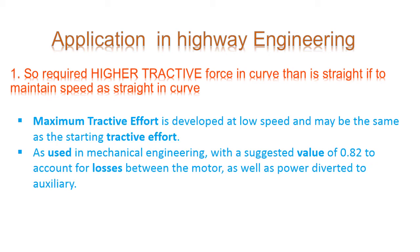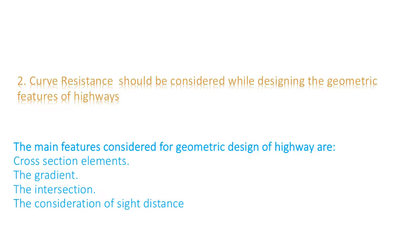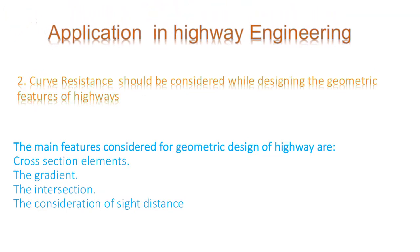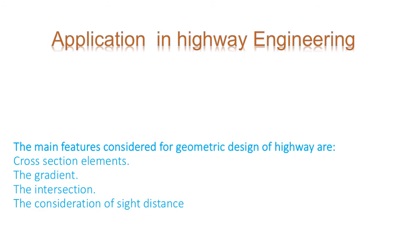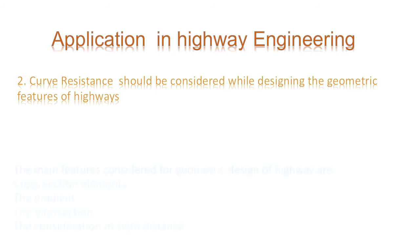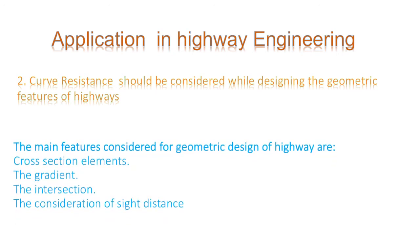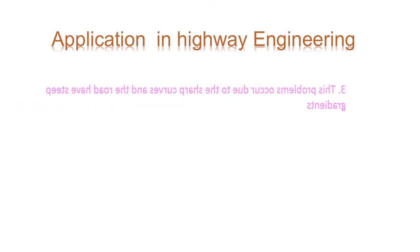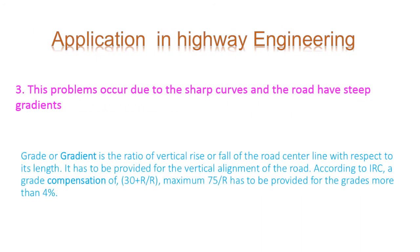Second application is curve resistance should be considered while designing the geometric features of highways. The main features considered for geometric design of highway are cross section elements, the gradient, the intersection, the consideration of site distance.